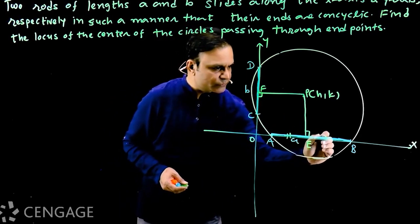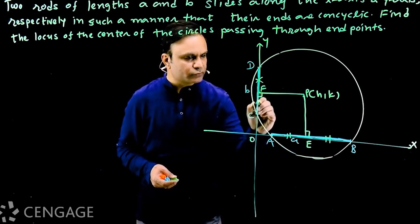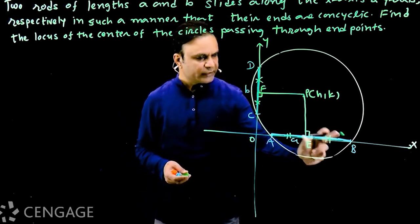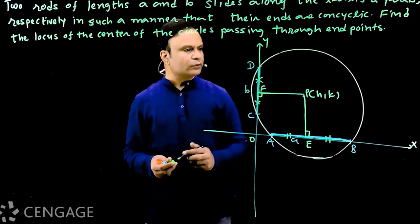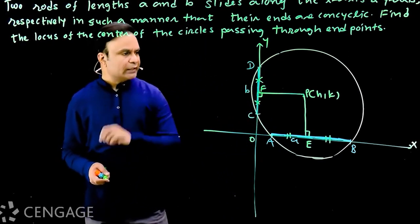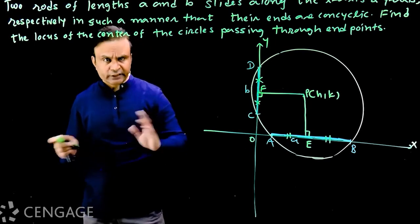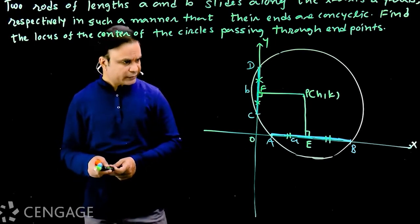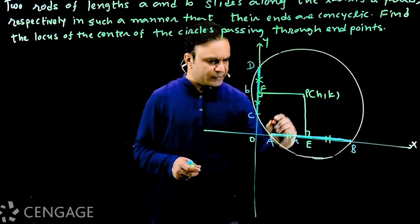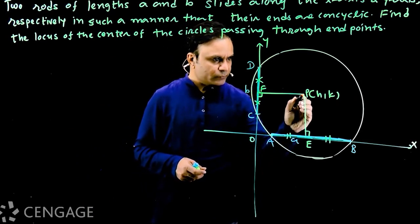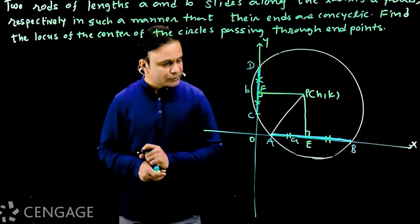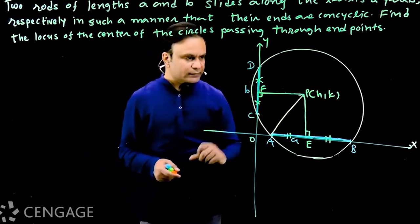These two distances are equal: AE = EB, and CF = FD. To find the locus of point P, we need to relate h and k. The idea is simple — join these two points. AP is the radius of the circle.